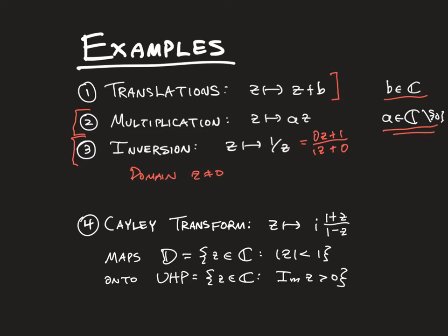And then, finally, a last example is something called the Cayley transform, and this is an important map. Here is its formula. It maps the unit disk onto the upper half plane, so the unit disk is all points in the complex plane with modulus less than 1, and it maps this onto the upper half plane, which is all points in C with imaginary part positive.